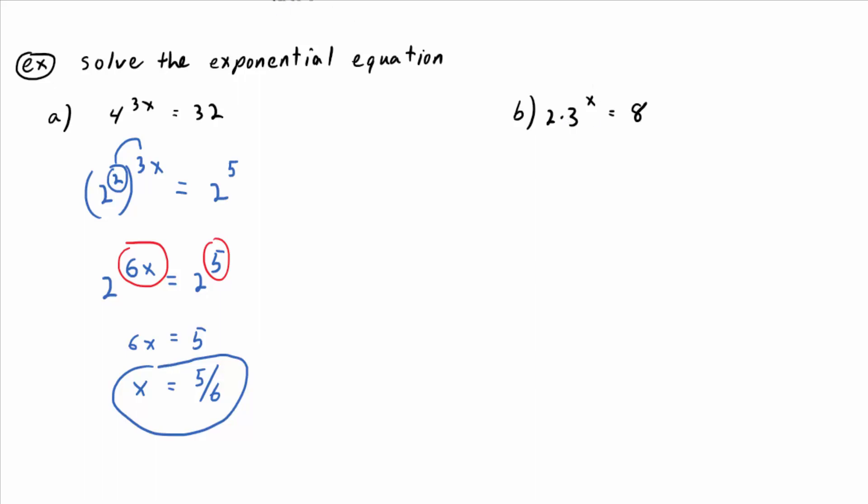In part B, you're going to need to have 3 to the x by itself. Look at what we have in part B. You have 2 times 3 to the x equals 8. That's what we have in part B.